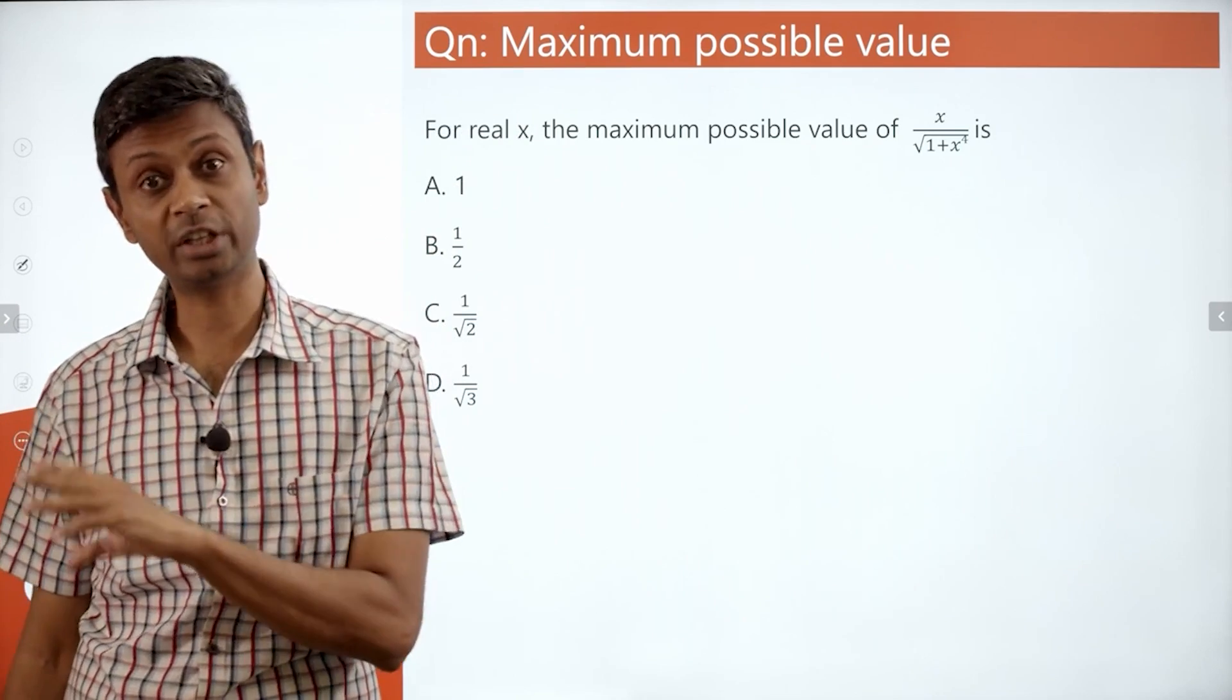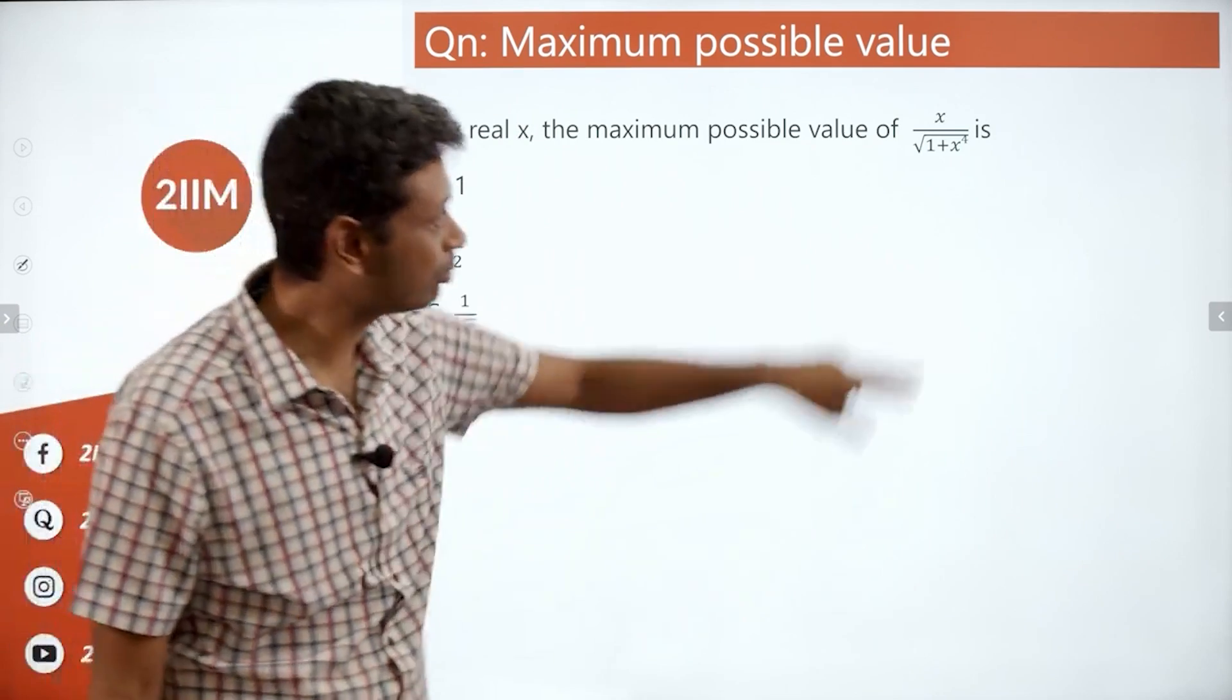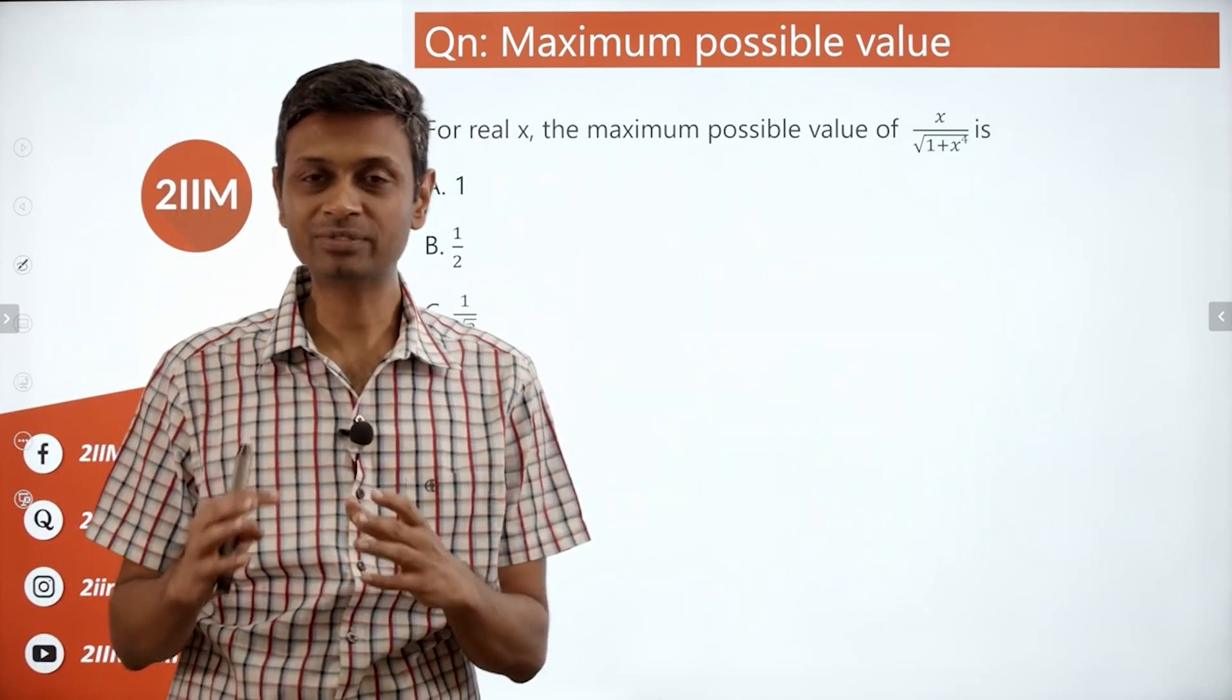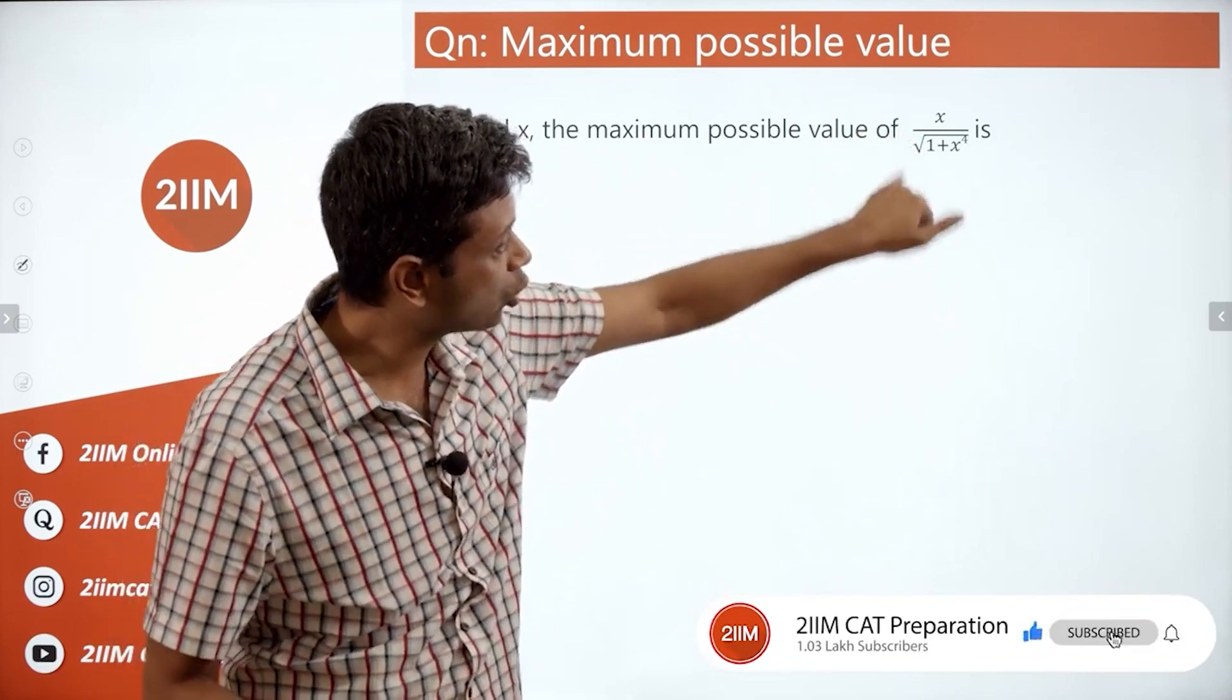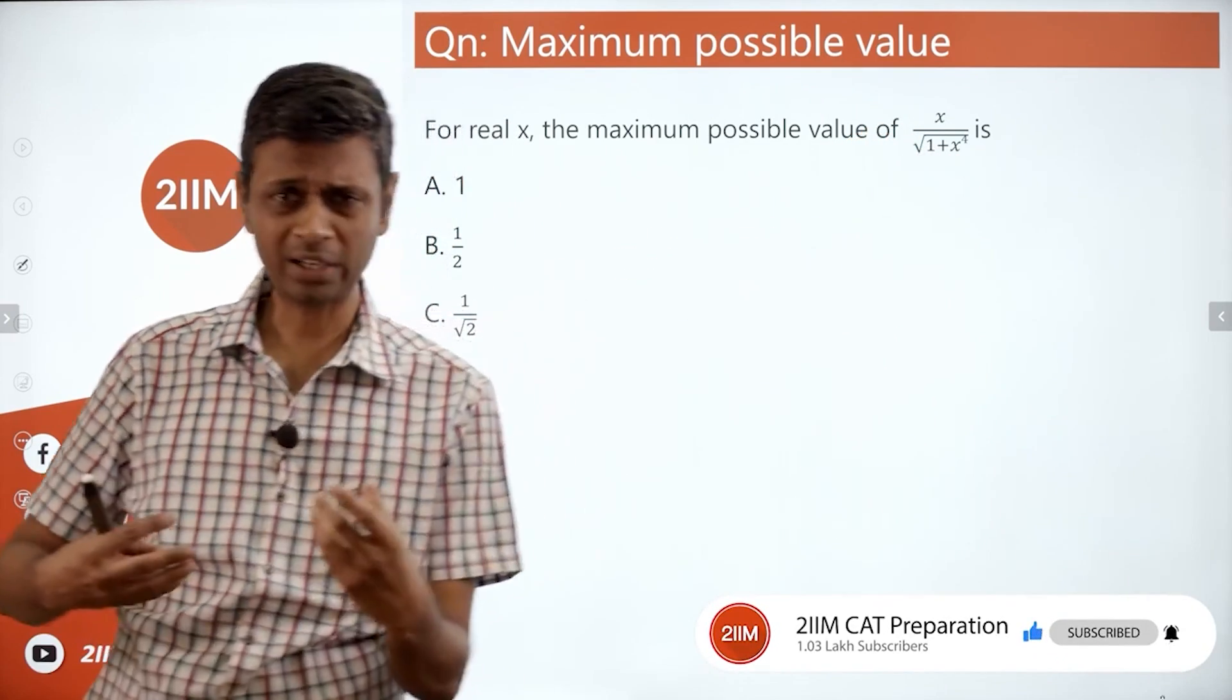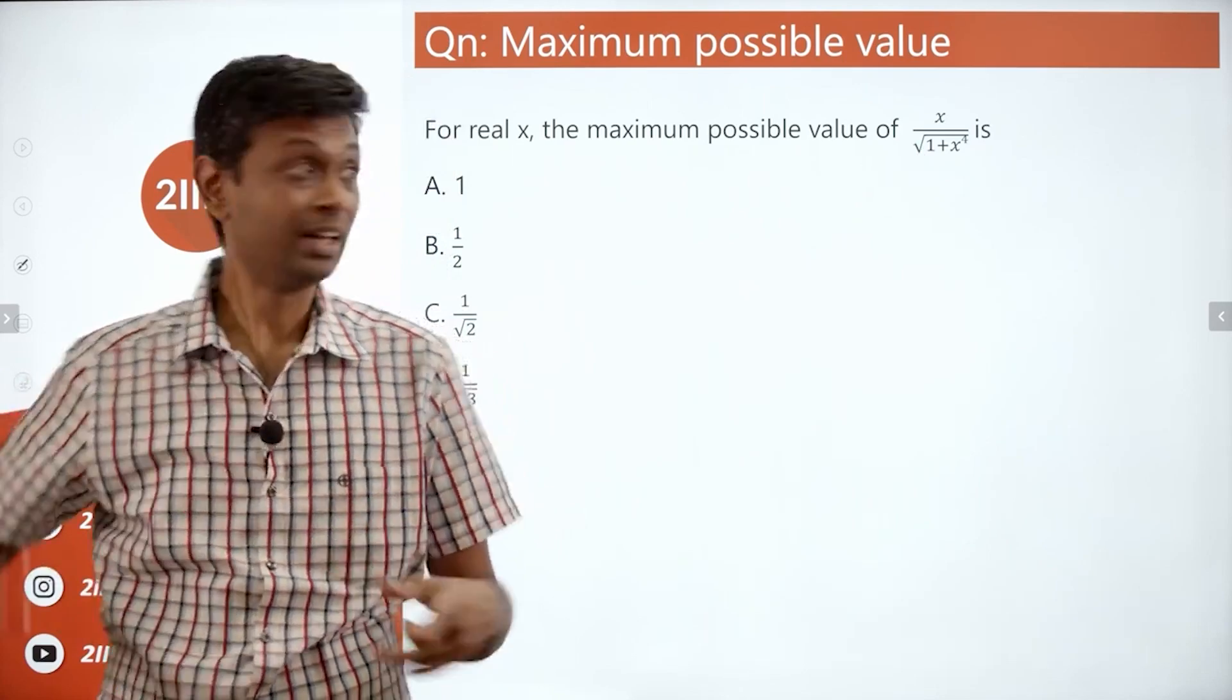Whenever there is a square root sitting here, see if you can simplify this expression to have some kind of symmetry. What do I mean by that? There is an x on top and then the square root and 1 plus x power 4. 1 and x power 4 are far away and x is in the middle.